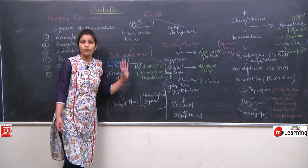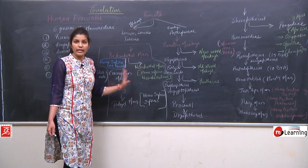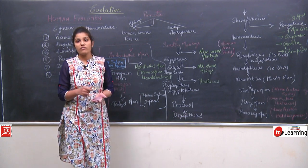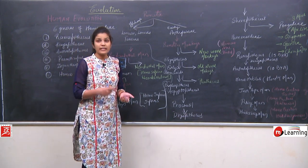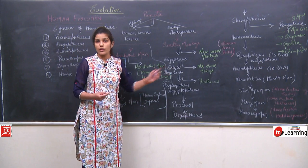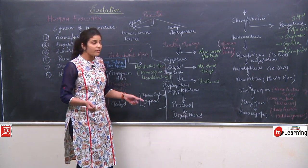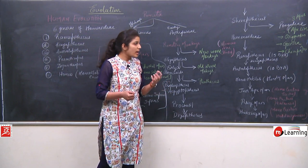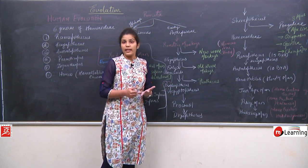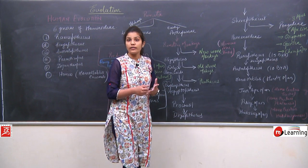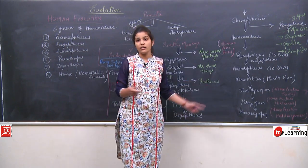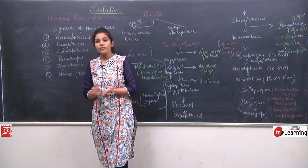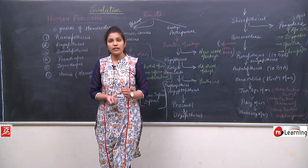This was the flowchart of human evolution. In the next lecture, we will discuss the characteristics of Dryopithecus, Ramapithecus, Australopithecus, and the individuals that evolved in the Homo erectus and Homo sapiens lines. After that, we will continue with the geological time scale.